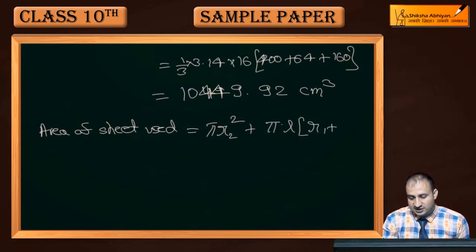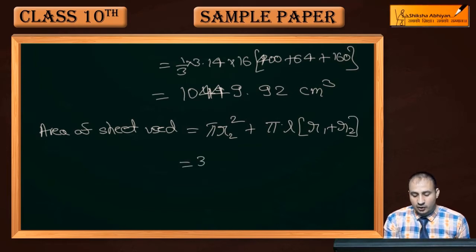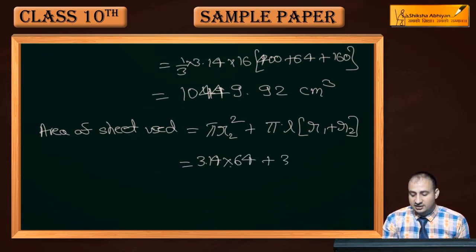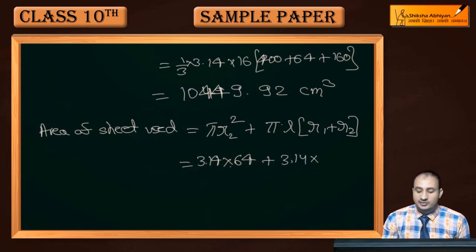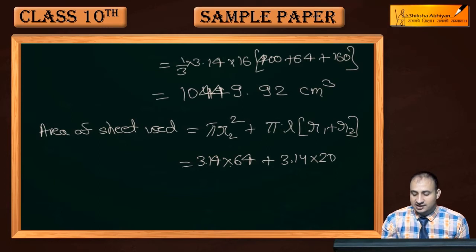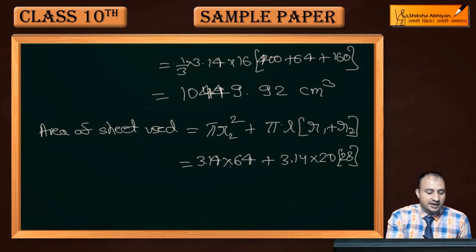Curved surface area = π × l × (r1 + r2) = 3.14 × 20 × (20 + 8) = 3.14 × 20 × 28. Adding both: total area of sheet used is calculated with r2² = 64, l = 20, and (r1 + r2) = 28.